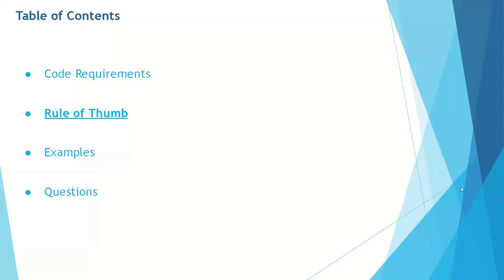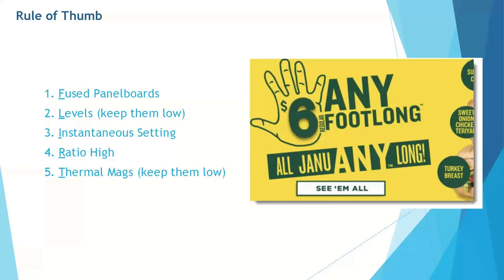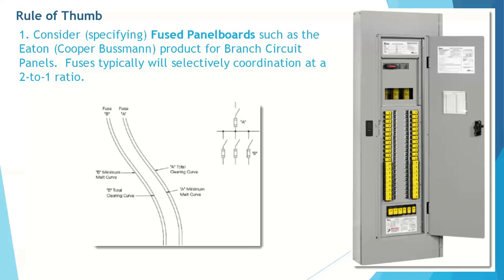In summary, the NEC requires selective coordination across the full range of time, typically understood to be down to 10 milliseconds or 0.01 seconds for both the normal and alternative source. This requirement can be costly to meet and will also require different system topologies than the days past. Often switchgear and breaker changes can become extremely expensive, especially during construction, which we have experienced many times this year. Moving on to the rule of thumb, I'm going to give you five rules of thumb for building selectivity into the design of your power system.